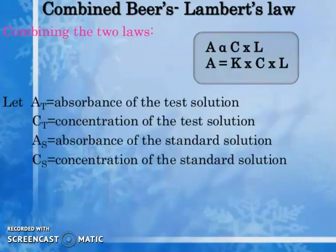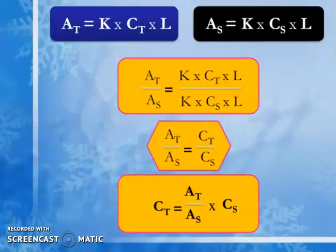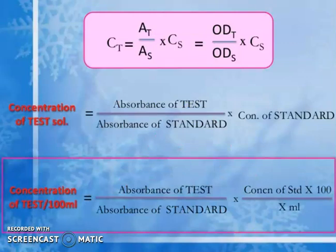Combining Beer's and Lambert's law: A is directly proportional to concentration (c) and path length (l), giving A = kcl. For an unknown (test) solution: At = k·ct·l, and for a standard solution: As = k·cs·l. Dividing these: At/As = ct/cs, therefore ct = (At/As) × cs, or equivalently: concentration of test = (absorbance of test / absorbance of standard) × concentration of standard × 100 nmol.